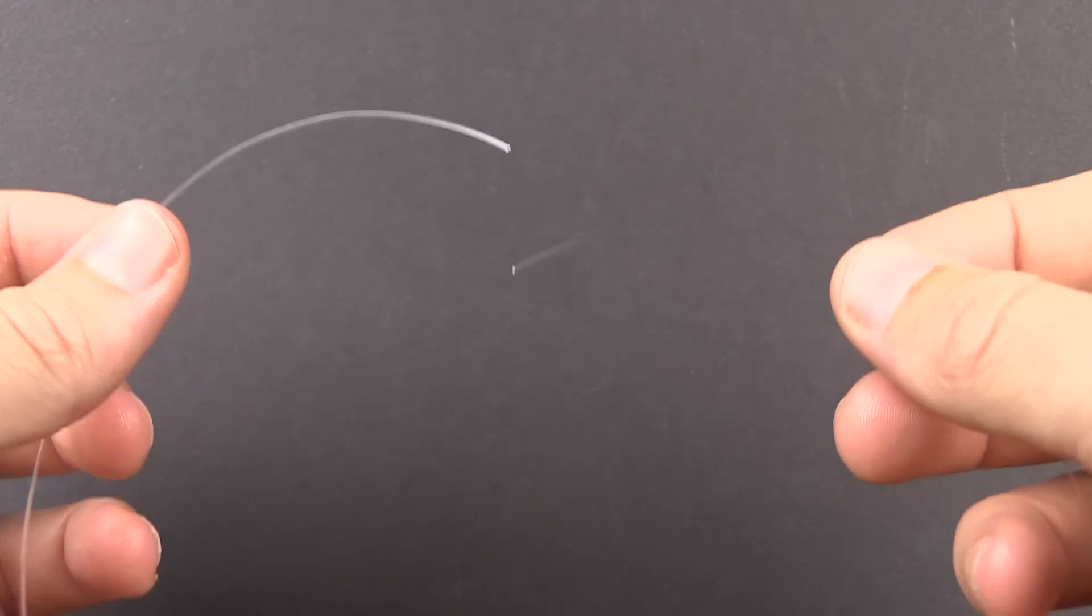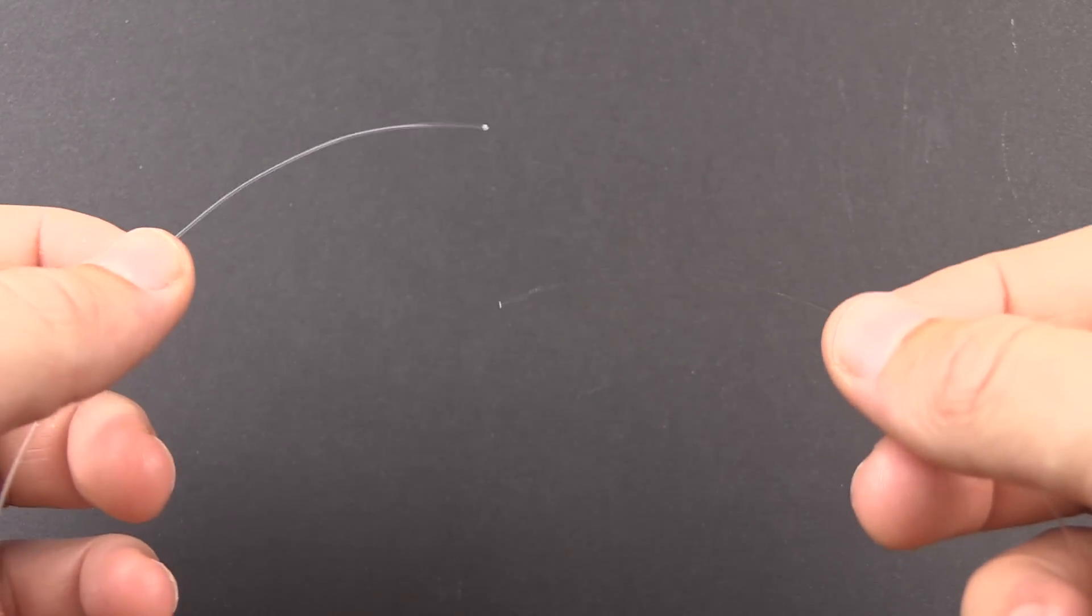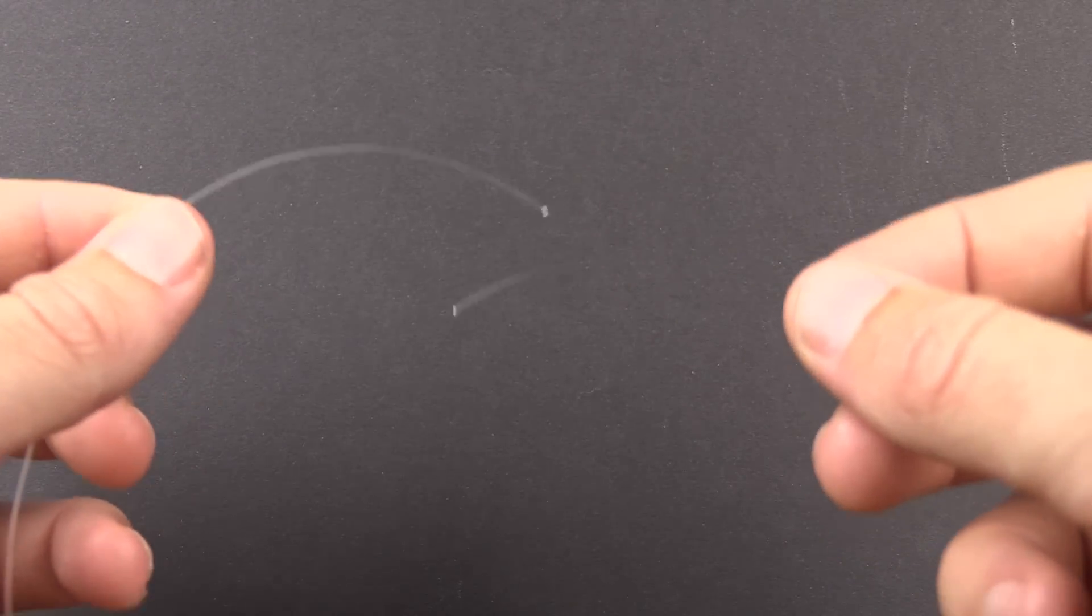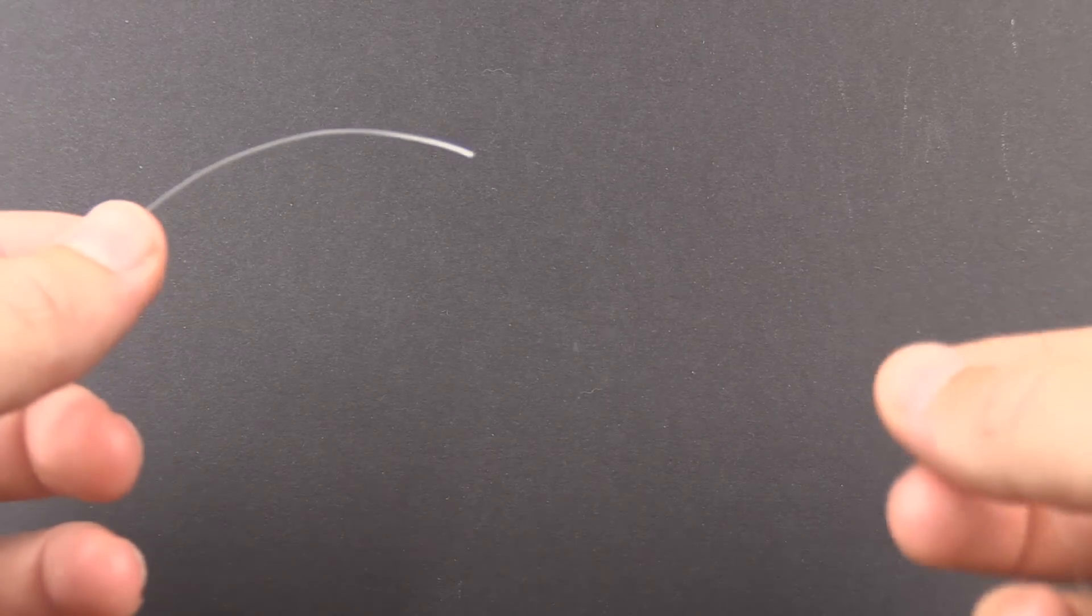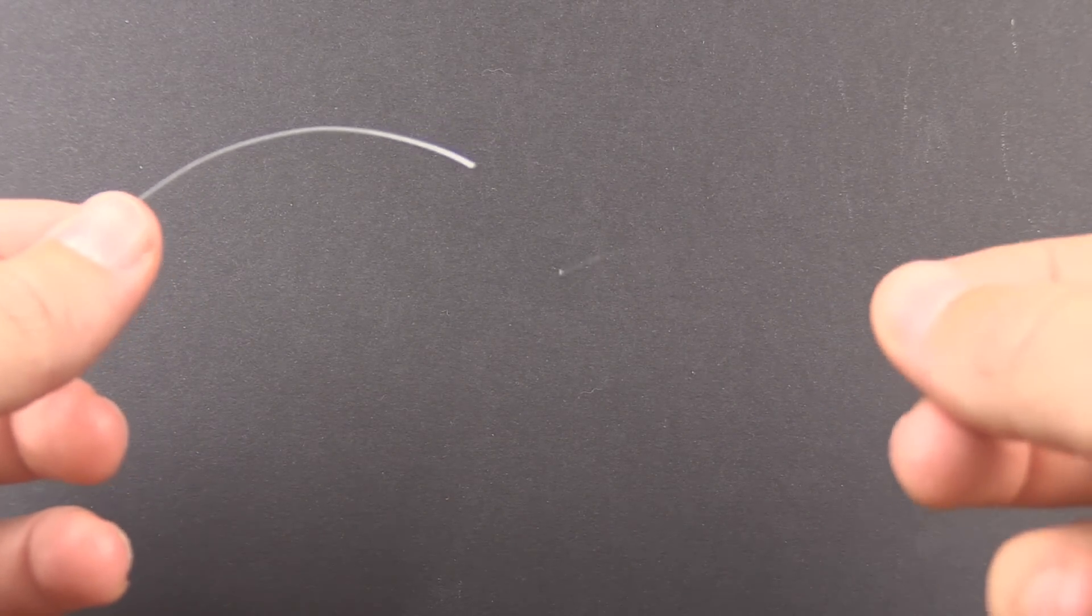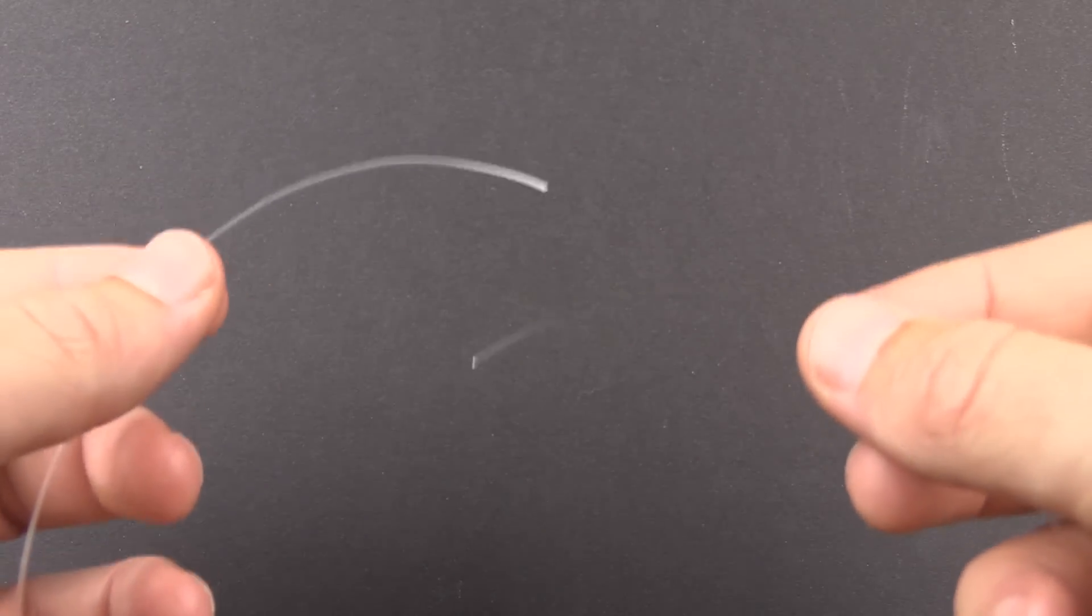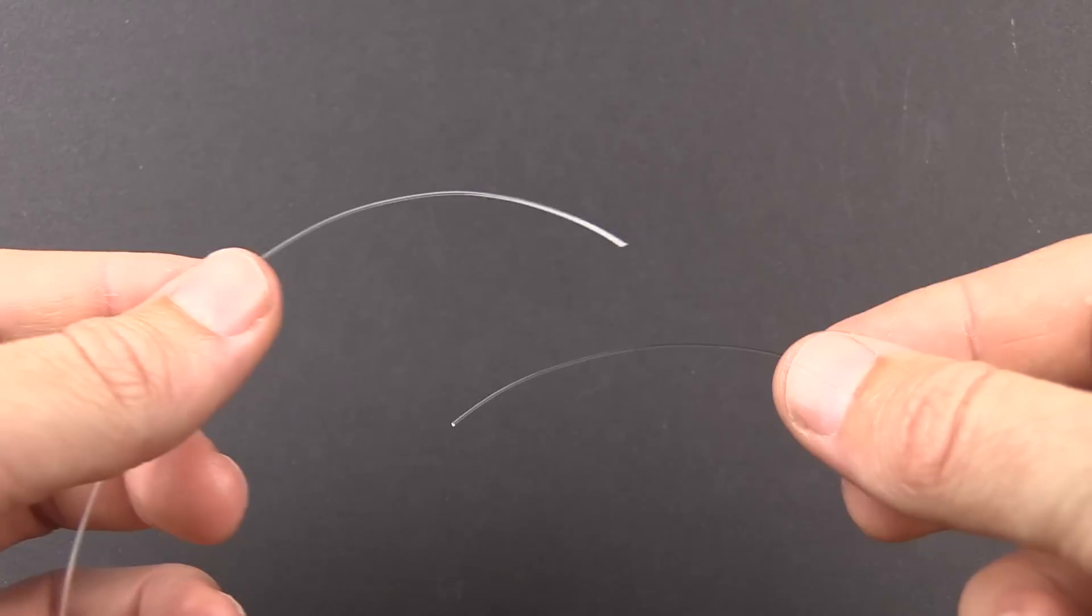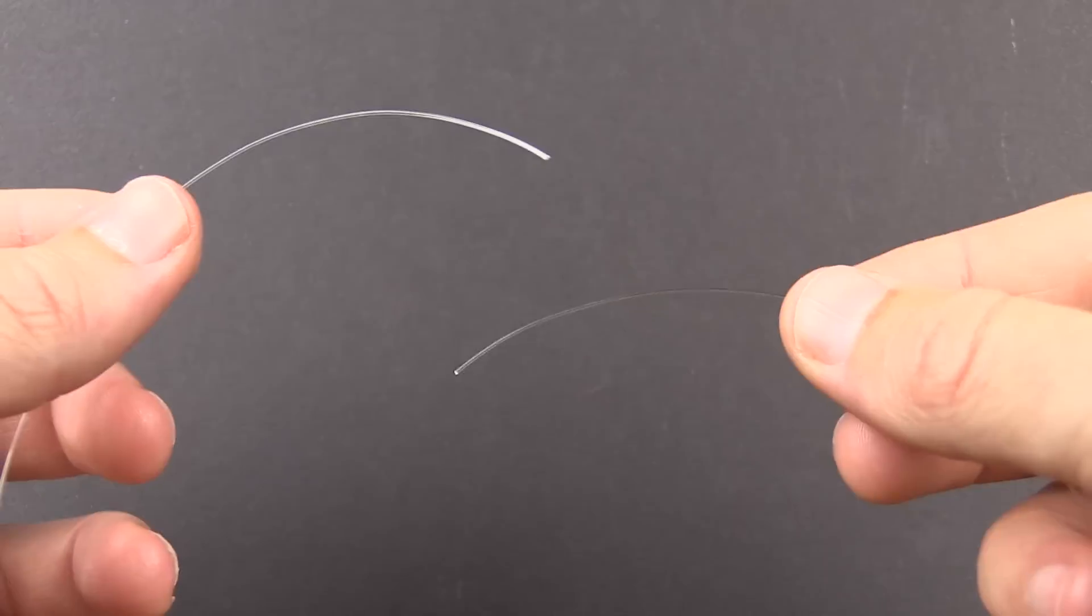In this video we're going to be tying the triple surgeon's knot for connecting two lines together of different sizes. Both lines are mono as you can see here, one is much lighter than the one on the left. The great thing about the surgeon knot is it is very easy to tie - people of all ages can tie it, even little kids - and it is extremely strong.